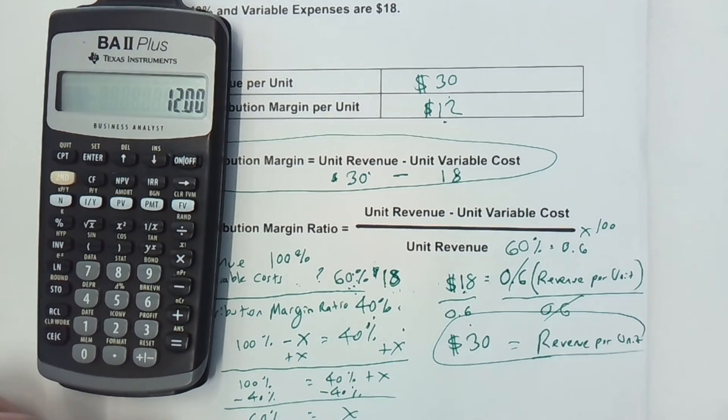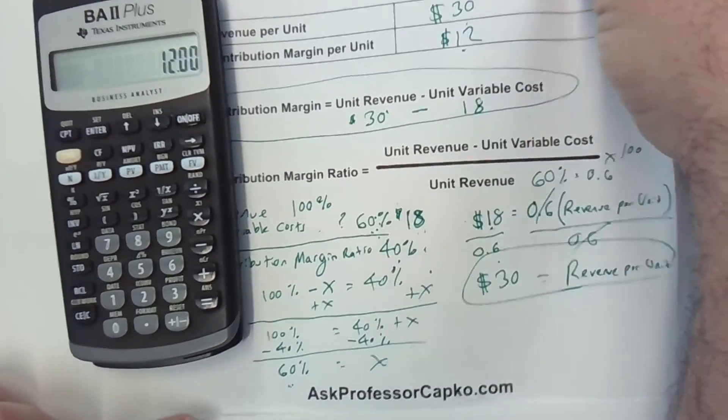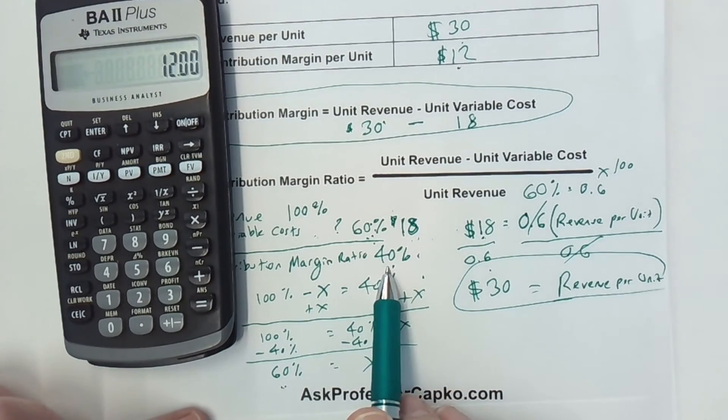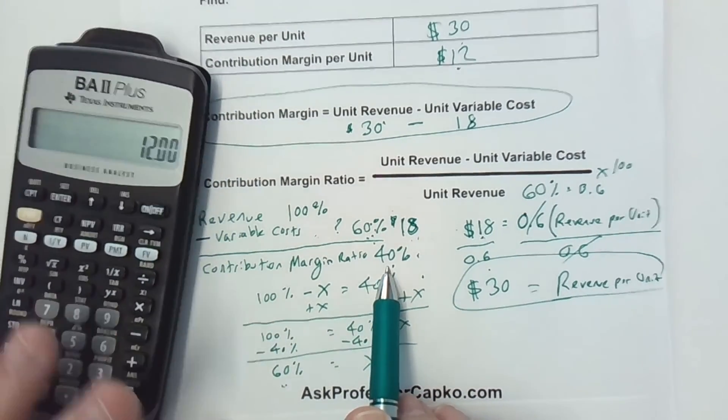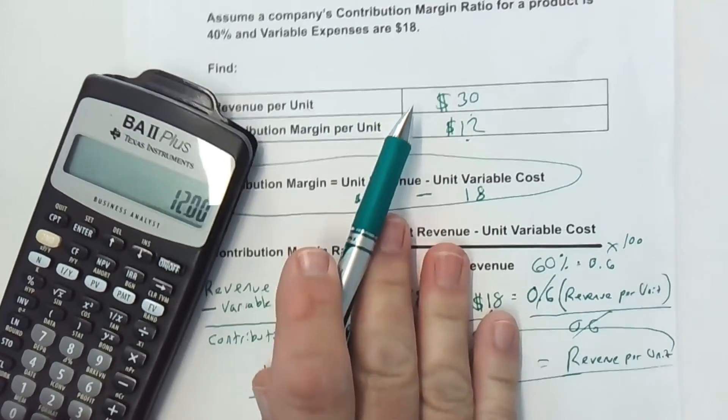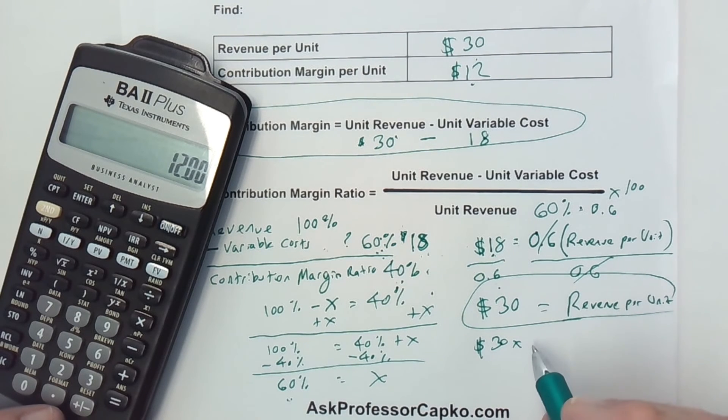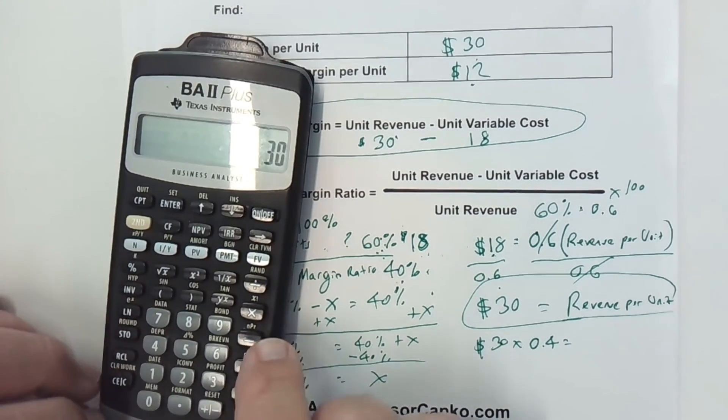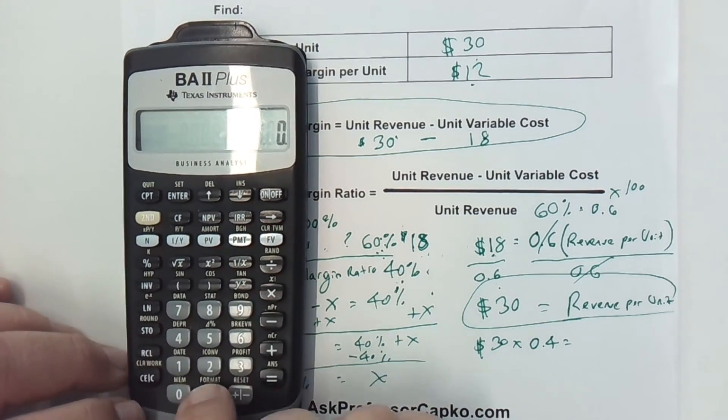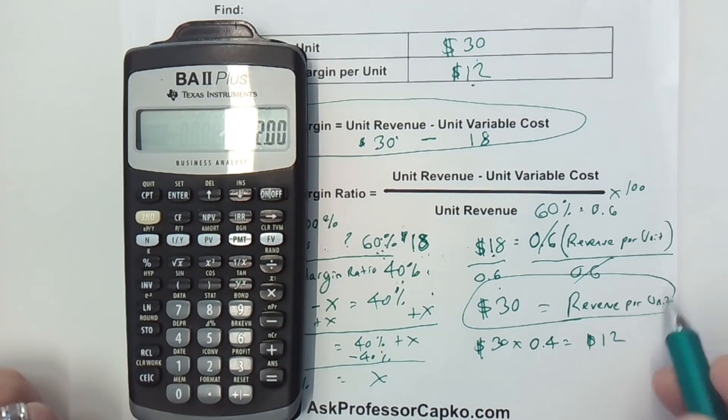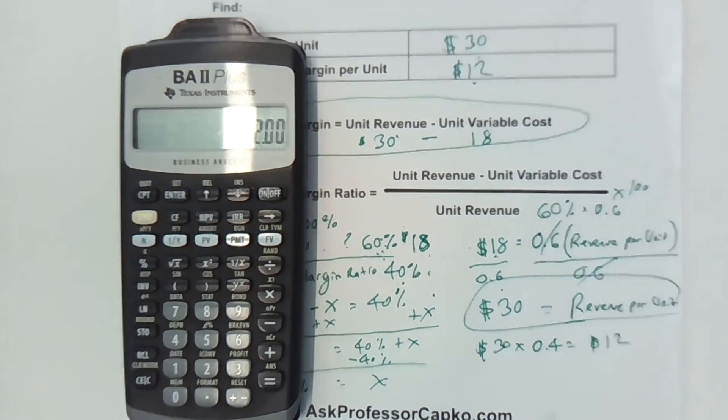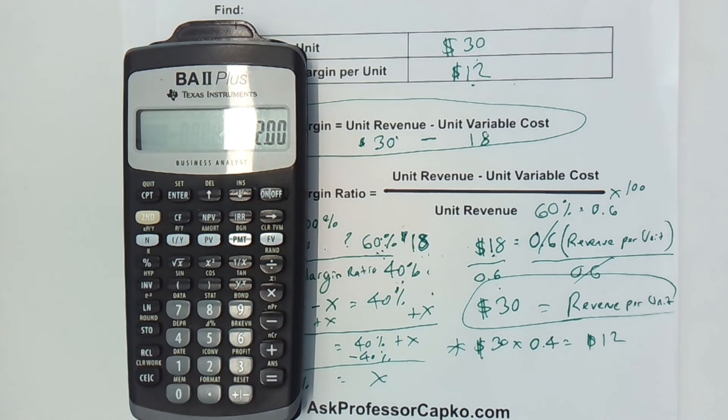We can also double-check this work because we know the contribution margin ratio is 40%. If we took the $30, we multiply it by 40%, which is 0.4 in decimal form. We take 30 and multiply it by 0.4, and that gives me $12. So that's a double-check, and I recommend double-checking your work if you can.